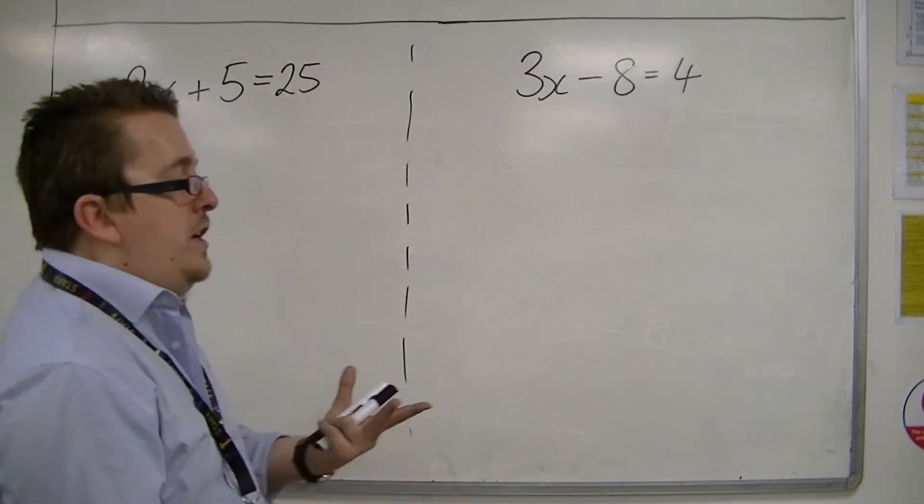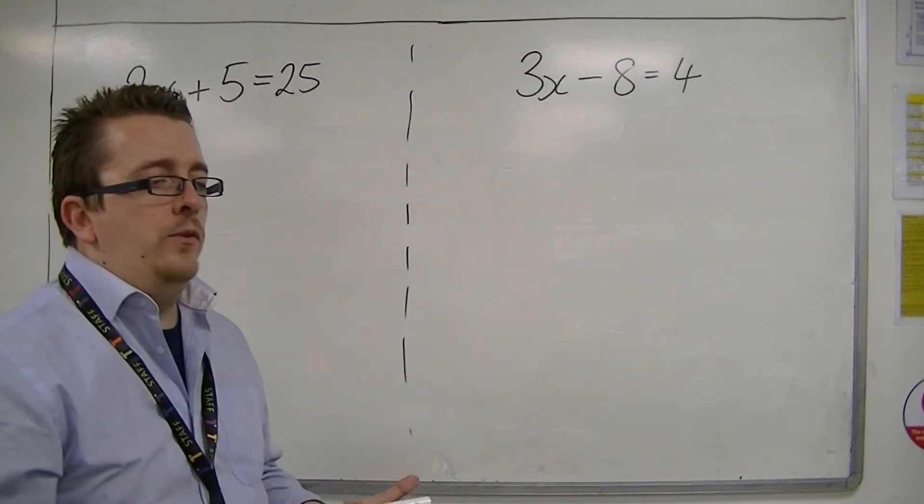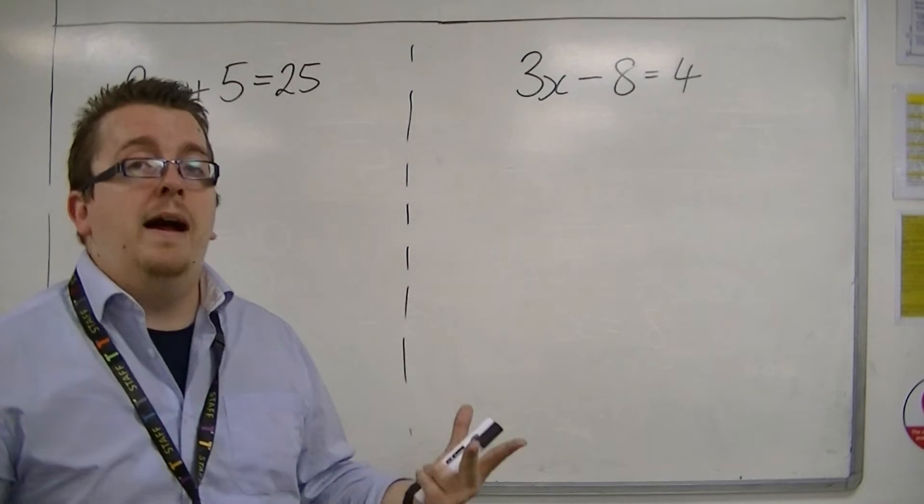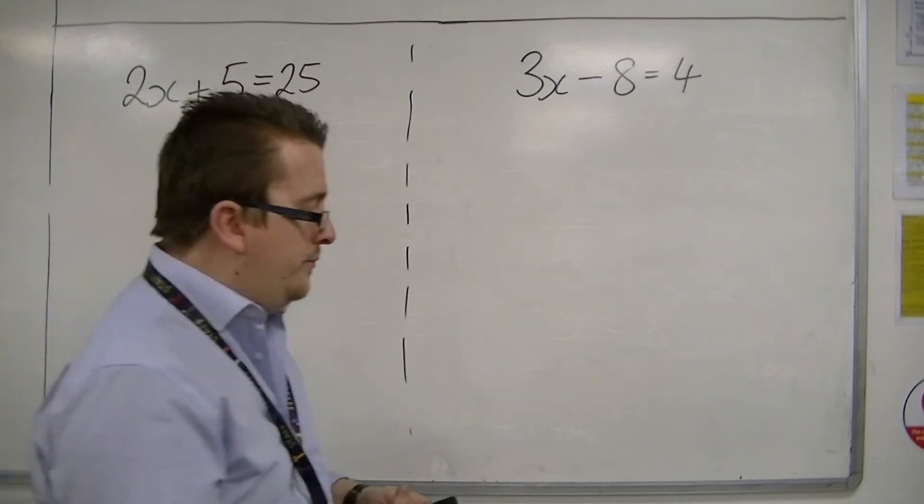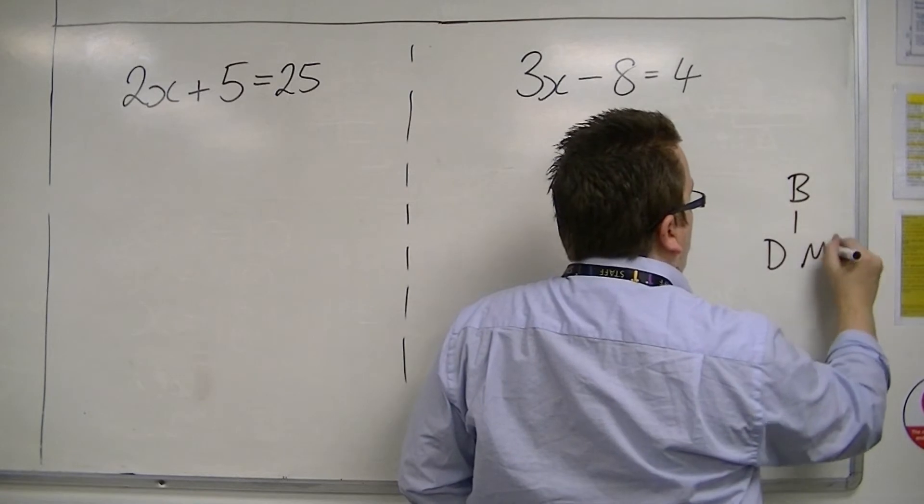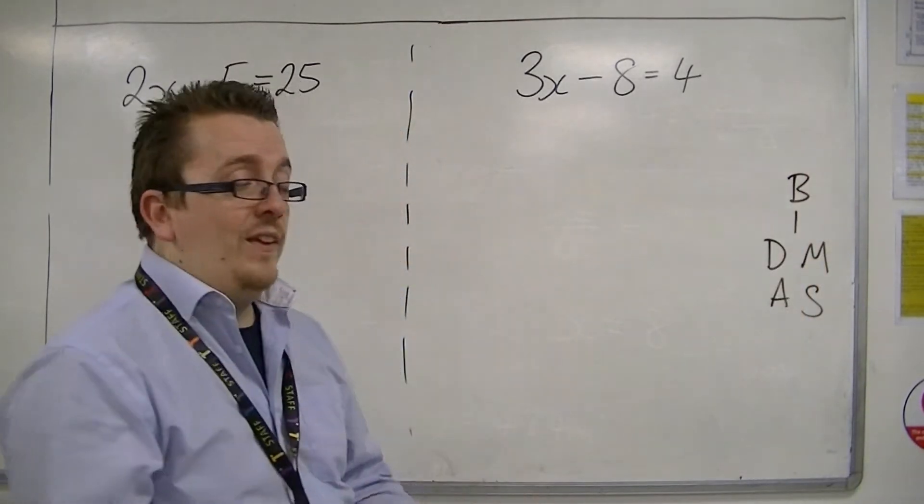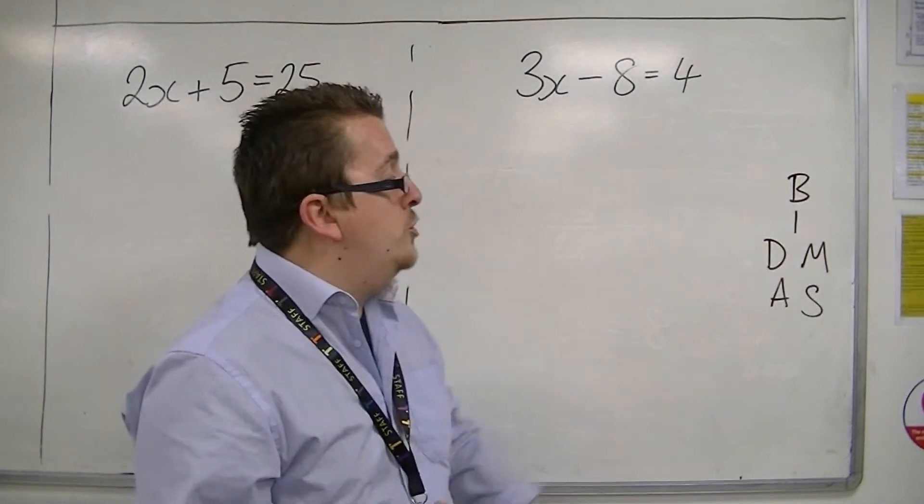The way that you do that is you're working BIDMAS backwards. Remember BIDMAS? BIDMAS looks like this, where you dealt with brackets first, then indices, then division and multiplication, then addition and subtraction.